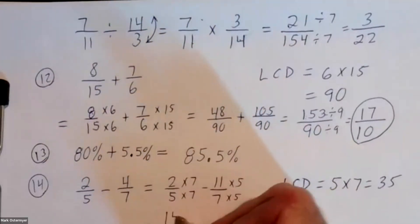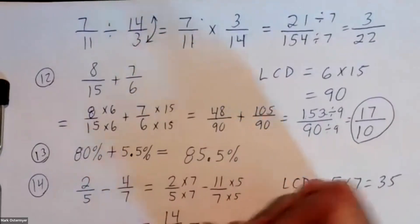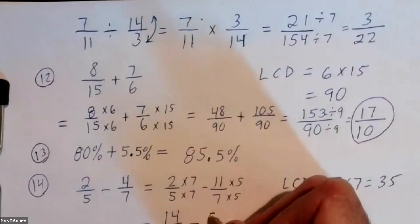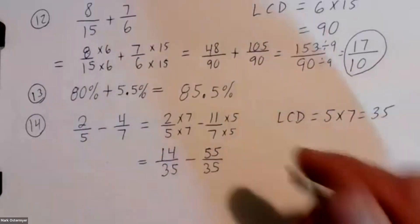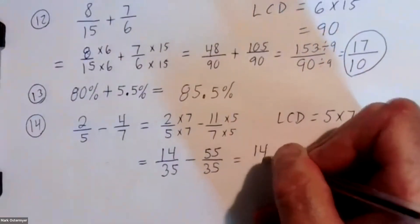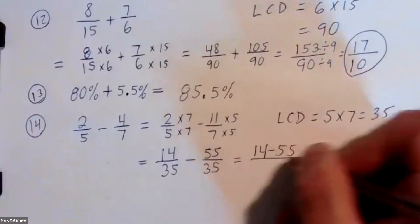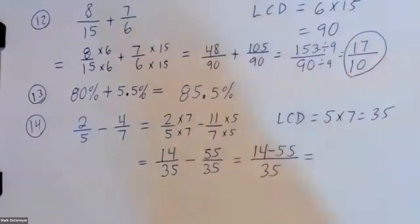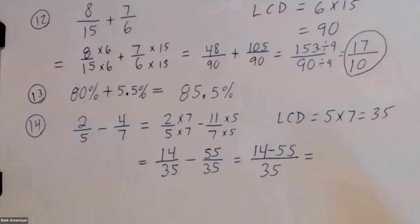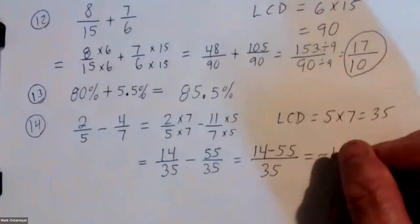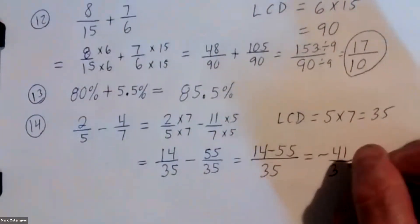Two times seven is fourteen over thirty-five. Four times five — wait, that should be eleven times five — is fifty-five. Therefore I have fourteen minus fifty-five over thirty-five. That gives negative forty-one over thirty-five, and that cannot be reduced.